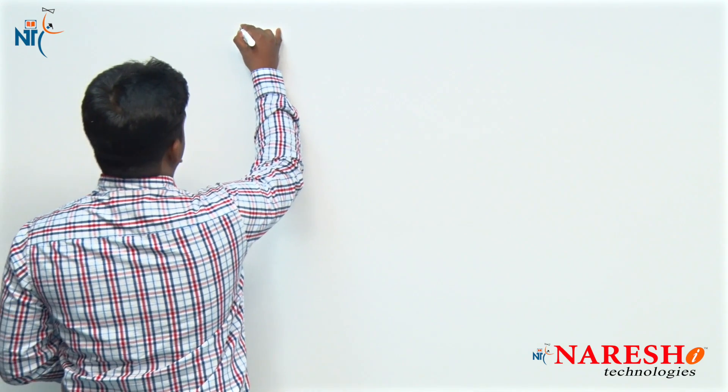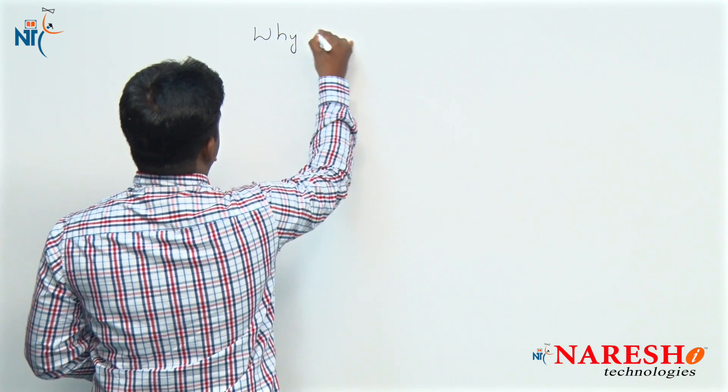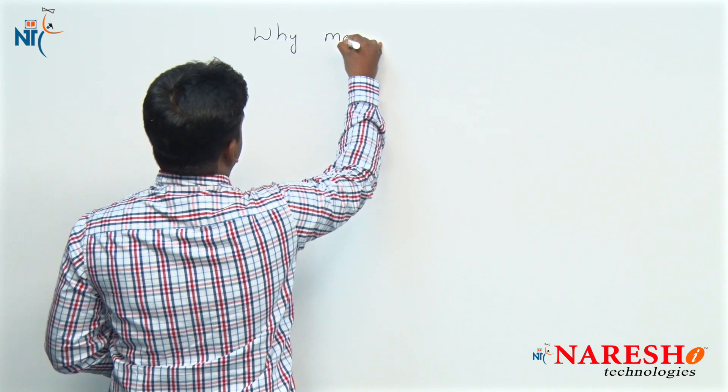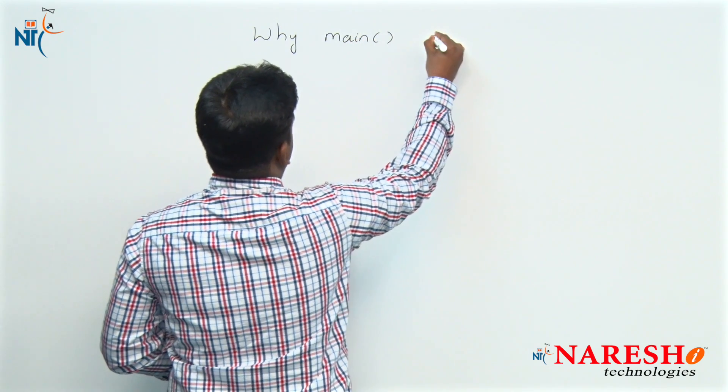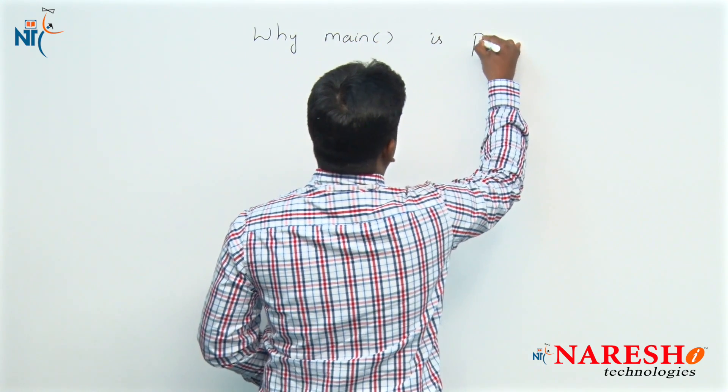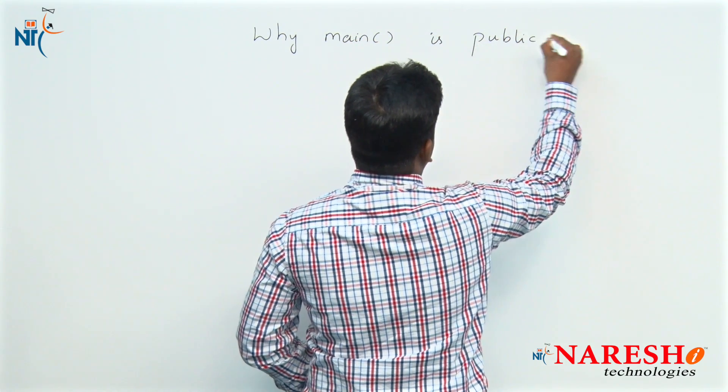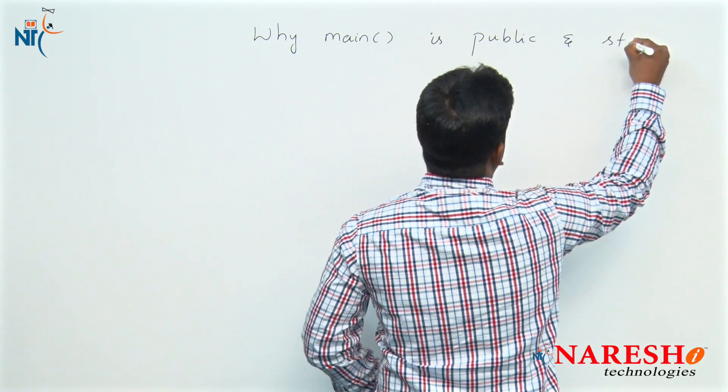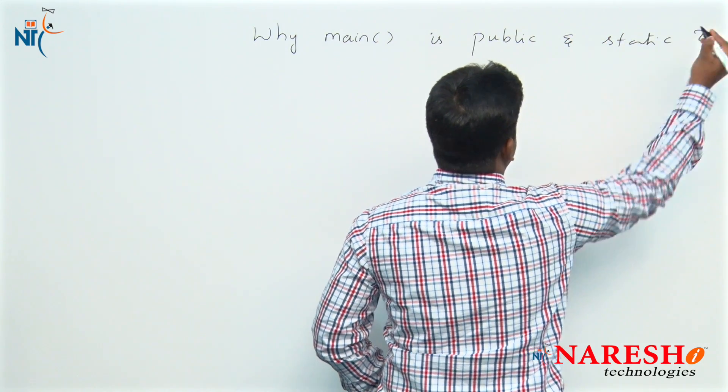Why is the main method prototype public and static? The question is: why is the main method public and static?